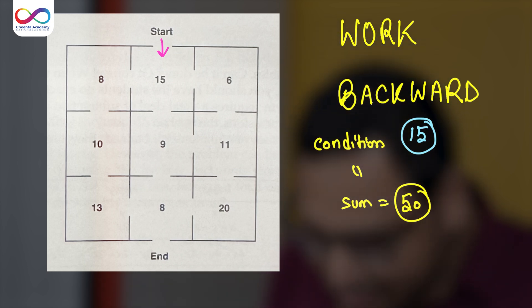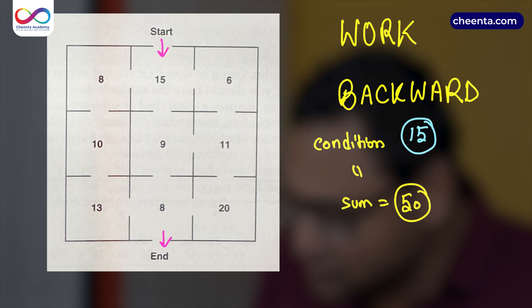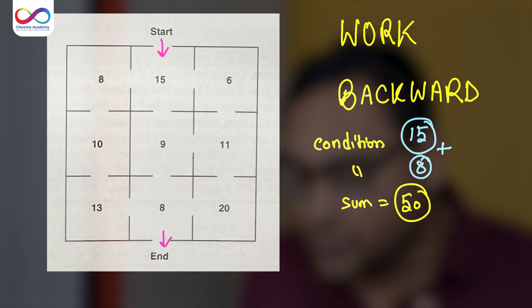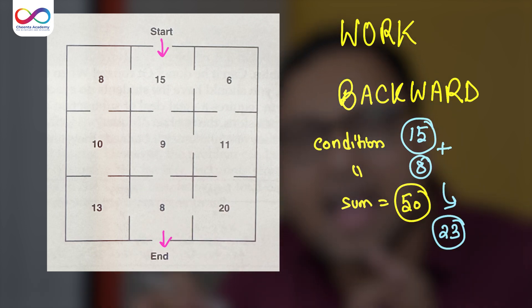So 15 must be there in your path. And you have to exit through the 8 box. So again, 8 must be there in your path. So 8 plus 15 is 23. Working backward, you have to have 23 in your 50, in your sum.